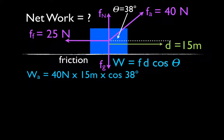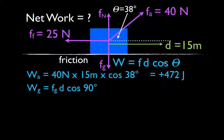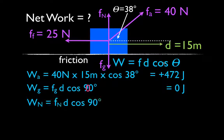That's why we multiply by the cosine of 38. If you do that, you get that the applied force does positive work — force in the direction of the motion — 472 joules. Now, the gravitational force and the normal force do no work, because they are 90 degrees to the displacement and the cosine of 90 is zero. So the gravitational force does no work, and the normal force does no work — it's just that forces at 90 degrees to displacement do no work on the object.